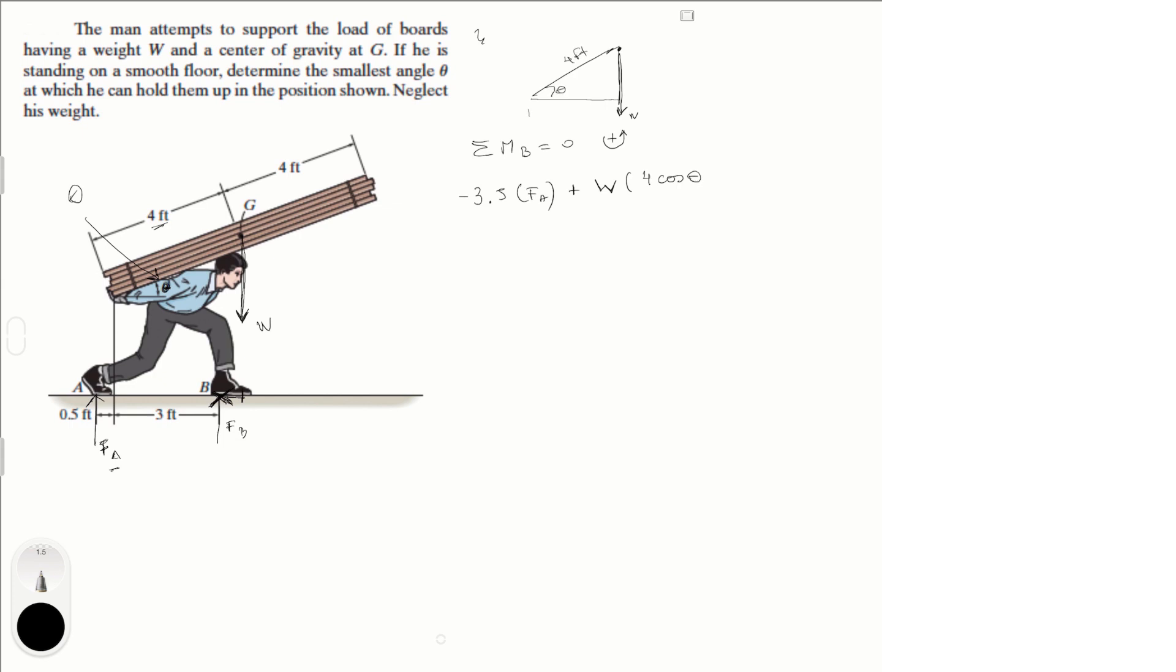So this distance is the distance that we're finding right here, which is 4 cosine of theta minus the distance from here to here. Okay, so I hope that makes sense.